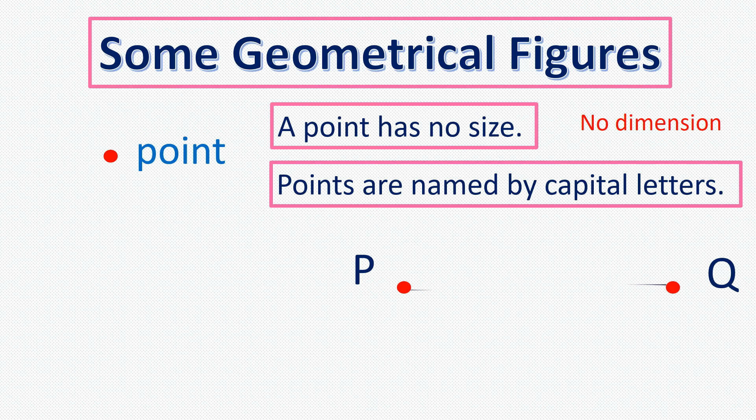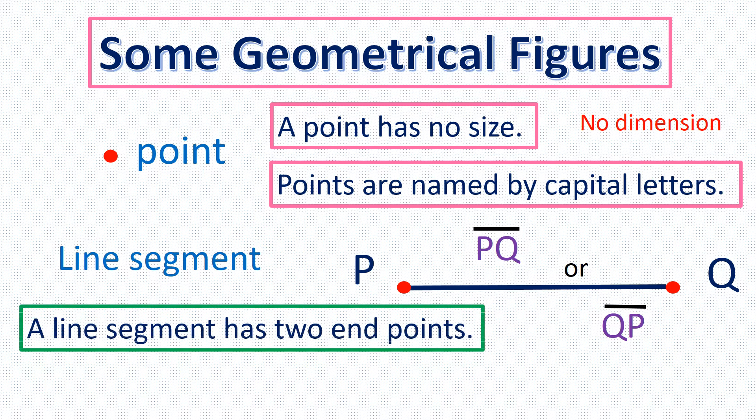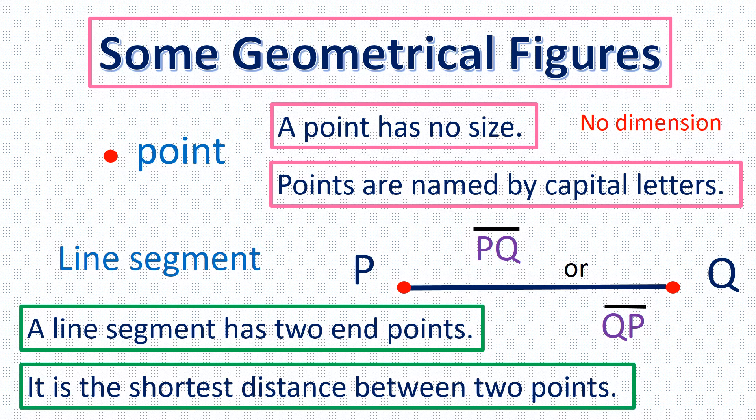If we connect these two points, we now have a line segment. We can read this in both ways as line segment PQ or line segment QP with a little symbol for line segment above the letters. A line segment has two endpoints and it is the shortest distance between two points.